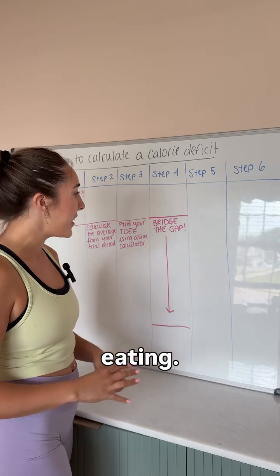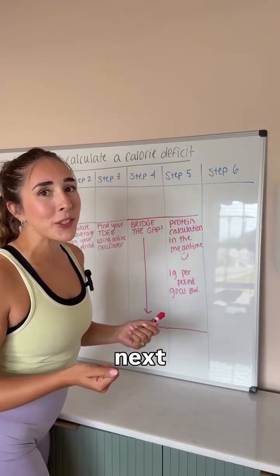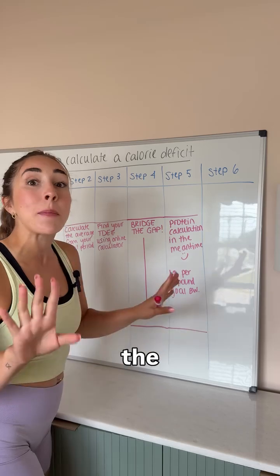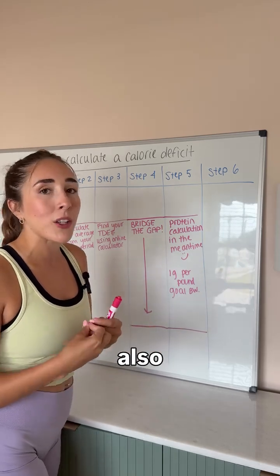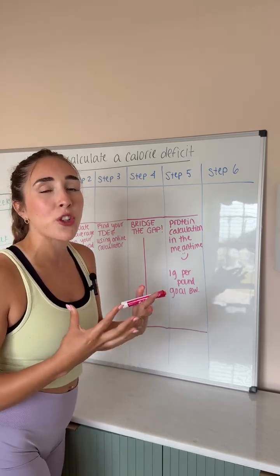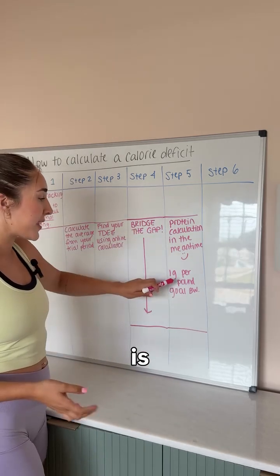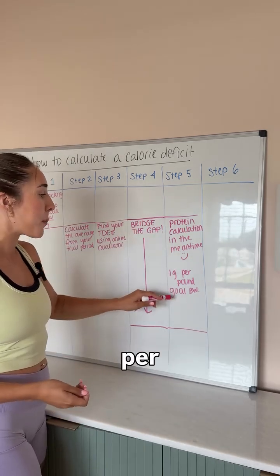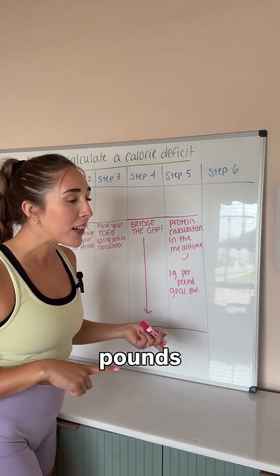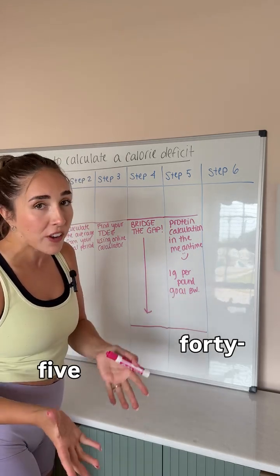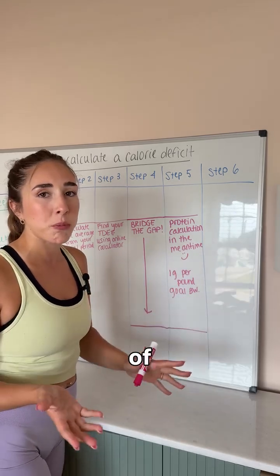I know you're already annoyed that you have to eat at maintenance for the next two weeks and you're not in your deficit yet, but in the meantime I'm gonna give you a protein goal, because this is also gonna be a huge driver in the progress that you see. For your protein calculation, all you're gonna do is eat one gram per pound of goal body weight. So if you're 175 pounds and your goal body weight is 145 pounds, you're gonna try to eat 145 grams of protein.